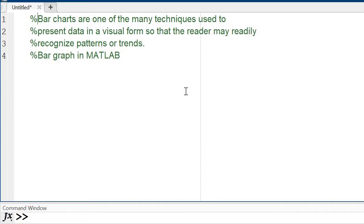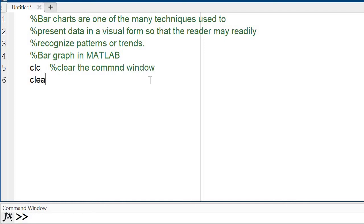Now start with the CLC command. CLC is used to clear the command window. After that, clear all — clear all is used to clear the workspace. Then after that, close all.